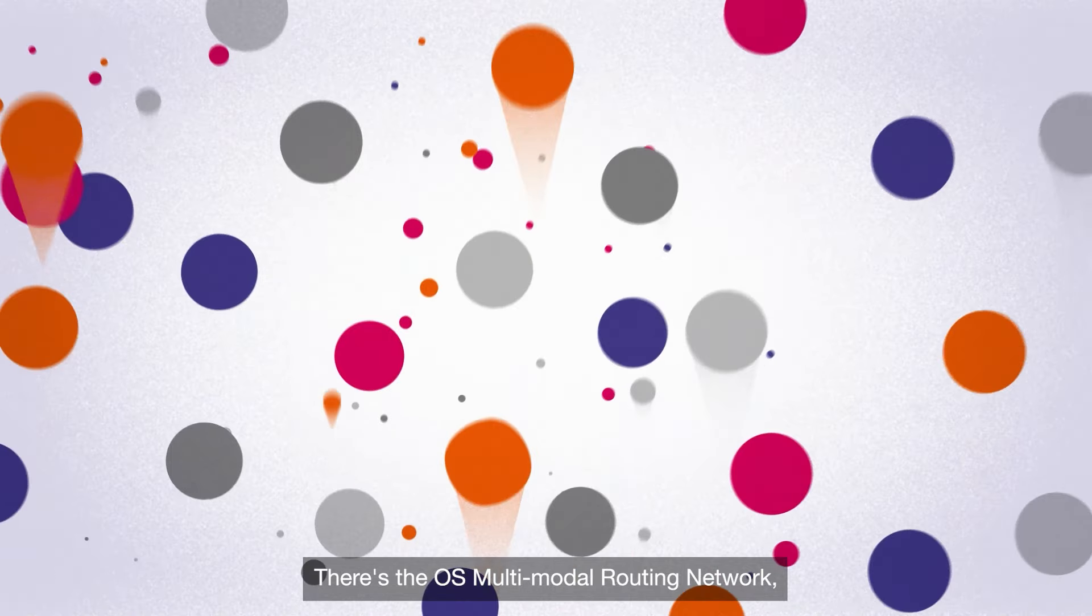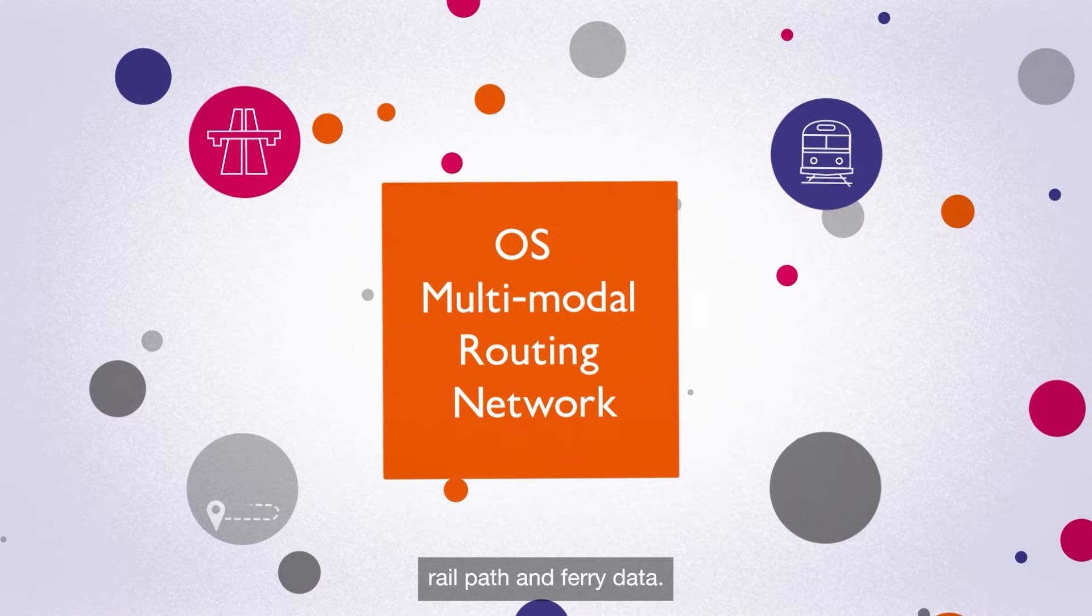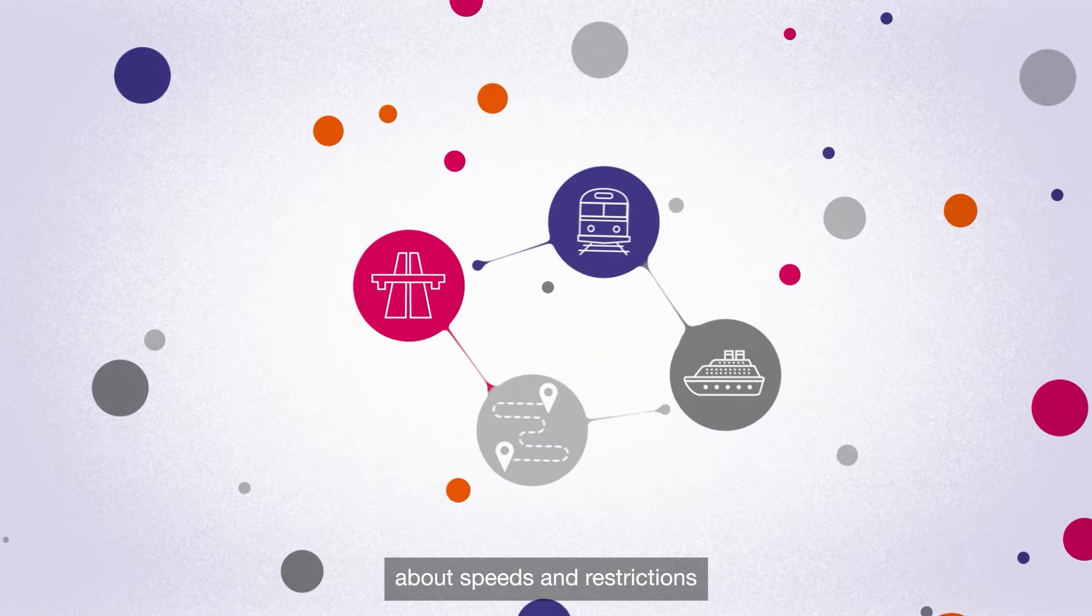There's the OS Multimodal Routing Network, which connects road, rail, path and ferry data. This provides information about speeds and restrictions